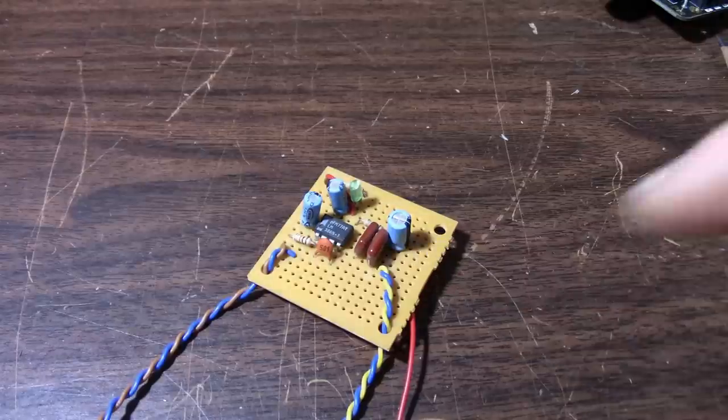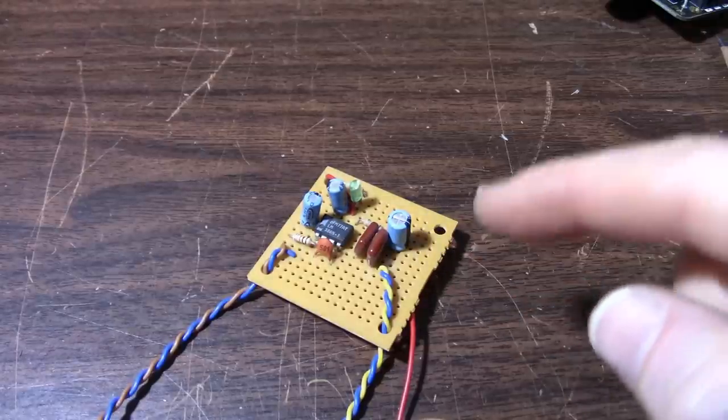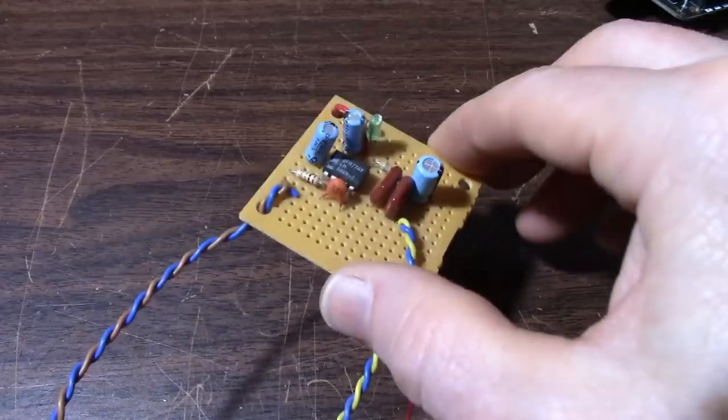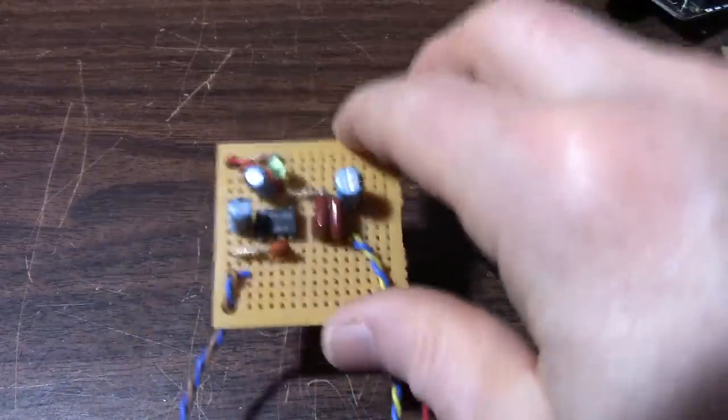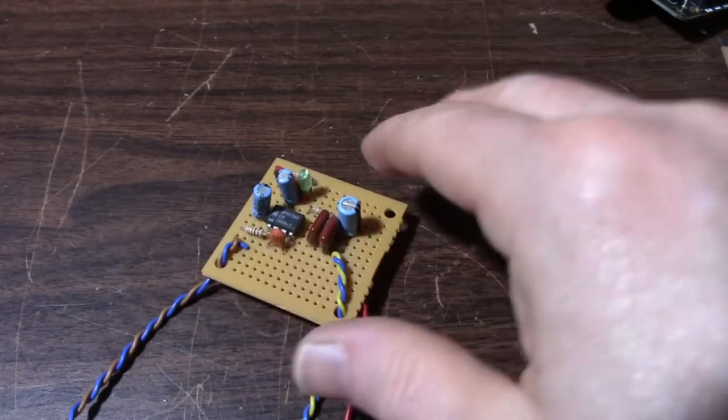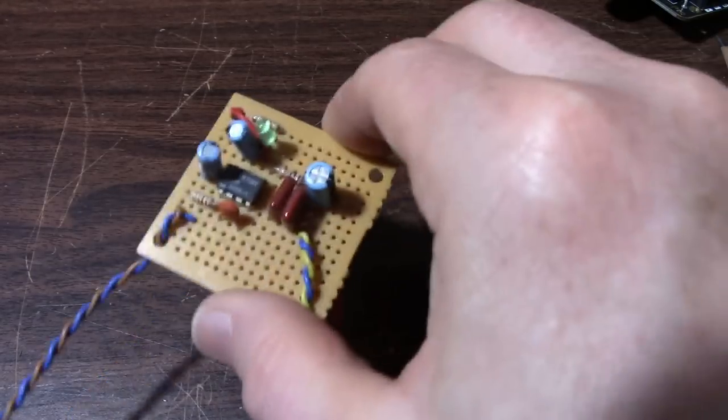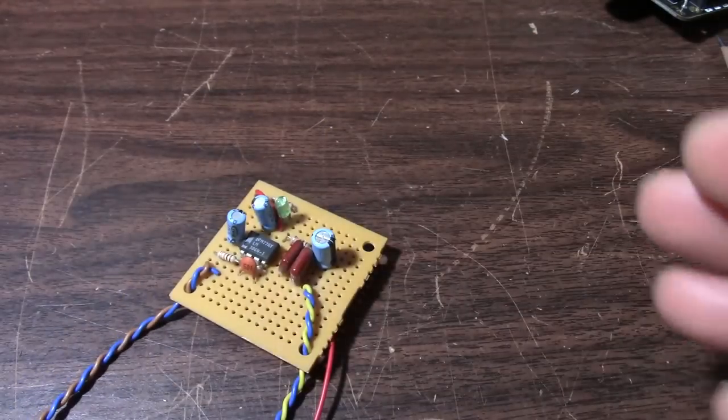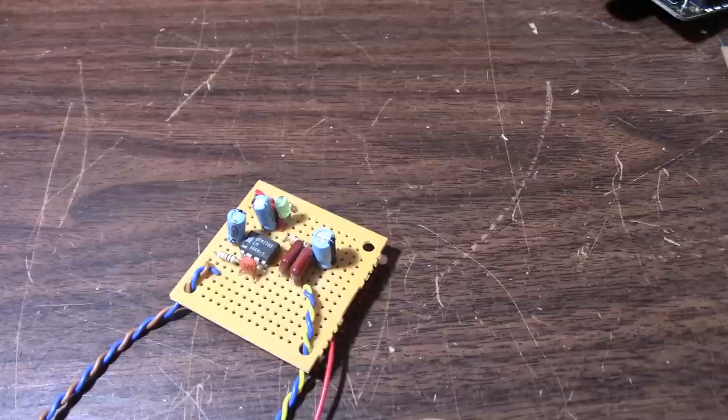And if you turn the volume up, the amplifier might start clipping on the bass notes and would sound pretty distorted in that small speaker. So in that case, you might want to use a smaller capacitor just to keep the lower frequencies out of the amplifier.